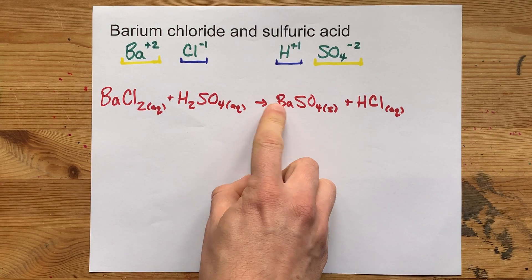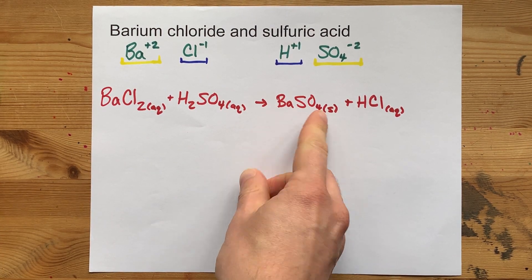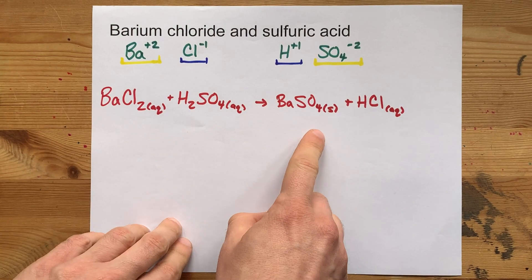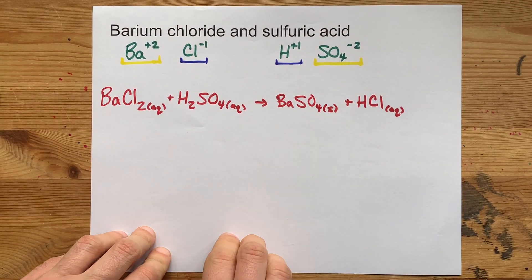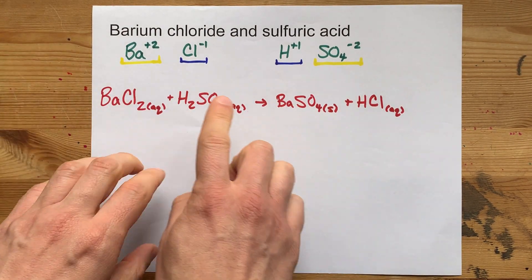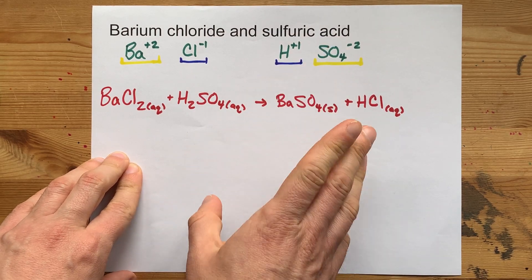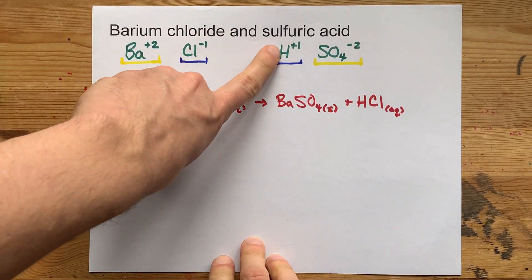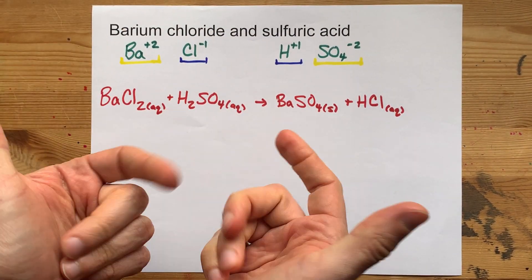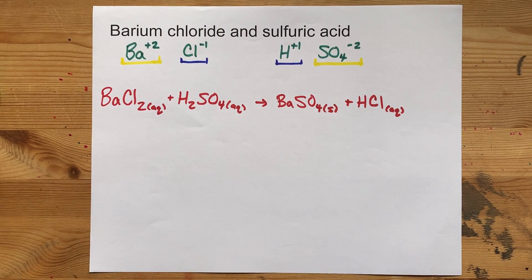And you will clearly have made a new substance. It's solid barium sulfate, which does not dissolve in water. That's why it's a solid. That's why it's a precipitate. And that's why there is a reaction between barium chloride and sulfuric acid. Thanks for being with me, and best of luck.